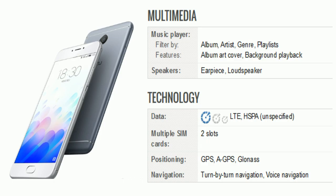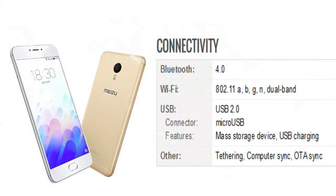Now comes technology. There are two SIM slots. Positioning covers GPS, AGPS, and GLONASS. Navigation includes turn-by-turn navigation and voice navigation. Connectivity options include Bluetooth, Wi-Fi, and USB. USB connector features include micro USB, mass storage device, and USB charging. Other features include tethering, computer sync, and OTA sync.